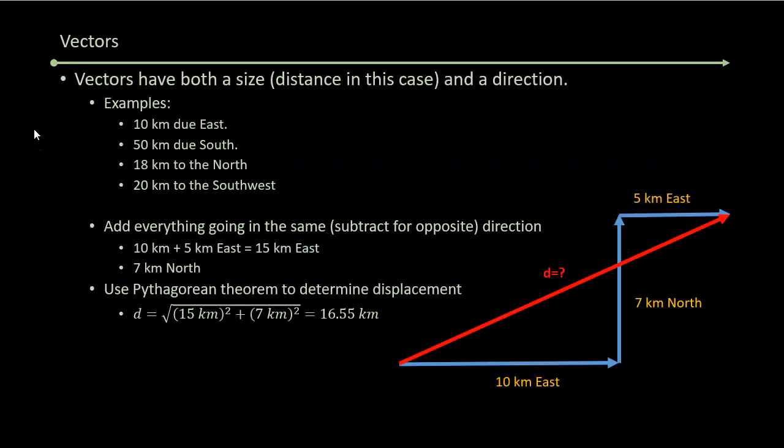You're going to have a lab exercise around vectors. And in this lab exercise, you're going to have to kind of keep straight how do you handle vectors. But vectors are really nothing other than a distance with a direction. 10 kilometers due east, 50 kilometers due south, 18 kilometers to the north, 20 kilometers to the southwest, which you'd have to break down into a south piece and a west piece, which you'll do in the lab.